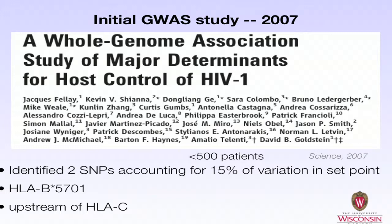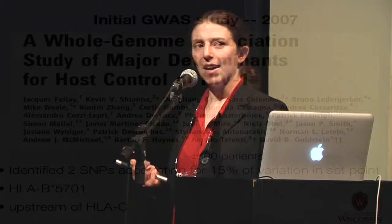I want to focus on a couple of genome-wide association studies. The first was the initial GWAS in 2007 where they evaluated fewer than 500 patients to look at whole genome associations with HIV control. They found two SNPs that could account for 15 percent of the variation in set point: HLA B5701 and a SNP upstream of HLA C. So they found what had already been identified in candidate gene studies — validating those previous findings.